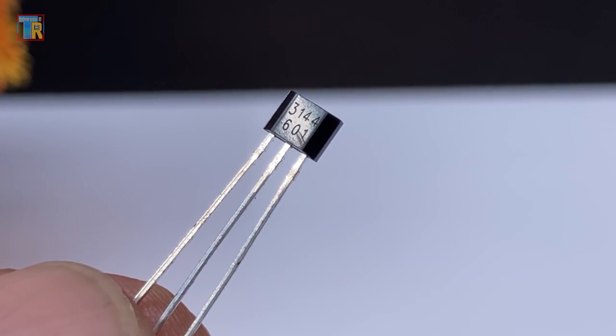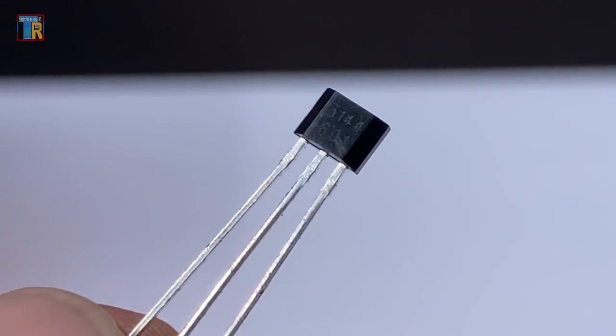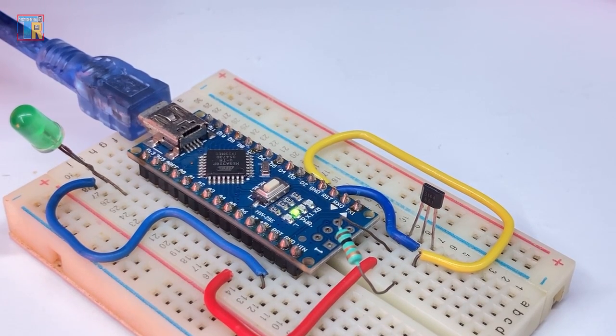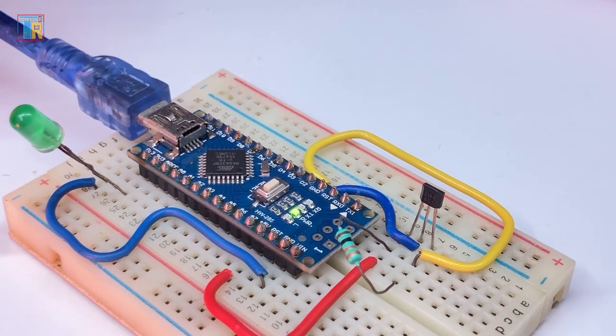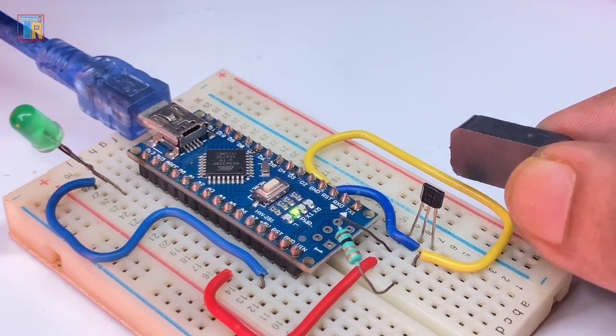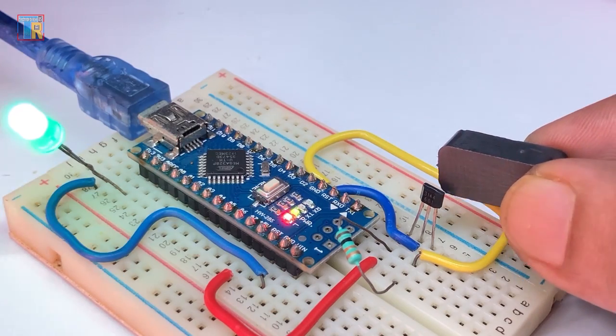I am showing you 3144 which is a digital sensor. Unlike a reed switch, it needs power to operate. Usually 3.3 volt or 5 volt but it is faster,